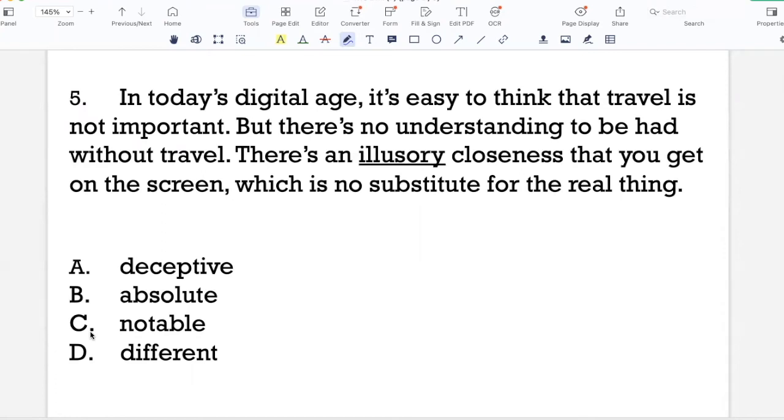So here we are talking about today's digital age, an age of technology where you can Skype or Zoom with a person halfway across the globe. And so it's easy to think that you don't really need to travel outside your city or your country because you can speak to anyone, video chat with anyone anywhere in the world. But the author is saying you can't really have real understanding without travel. There is an illusory closeness that you get on the screen. So the closeness that you get on the screen, the closeness that you get with someone on a tech platform is not real. It's illusory. Which is no substitute for the real thing. So you can see that I need an antonym for real because I'm kind of putting them in contrast, illusory versus real.